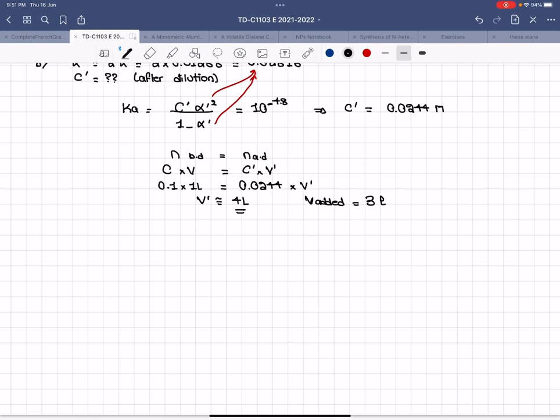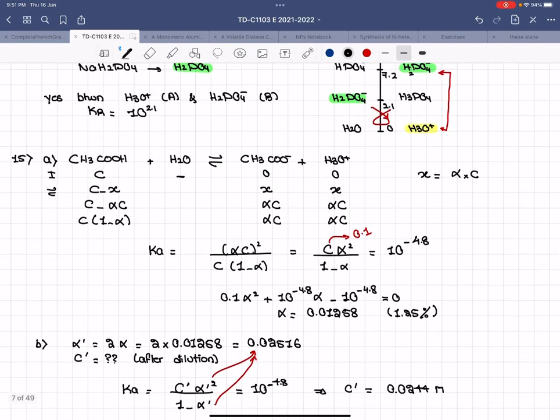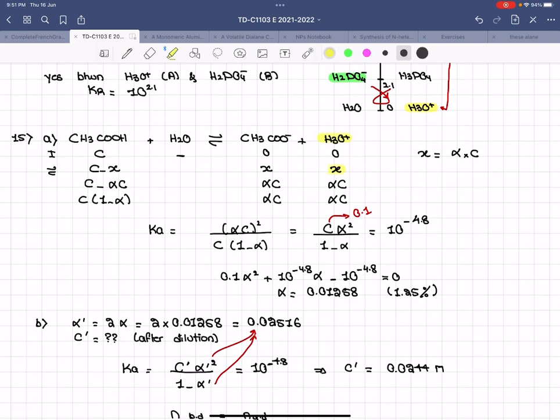Now you have to calculate the pH. pH is negative log H3O plus. Remember that you have your alpha. If you have your alpha, H3O plus is very easy to calculate. You have to remember that alpha is basically equal to X over C. Here I'm working after dilution, so let's give it prime. X prime over C prime.